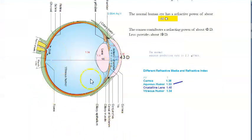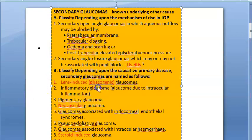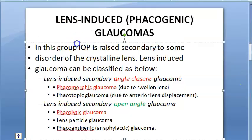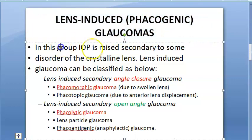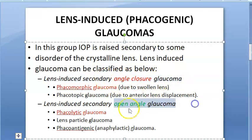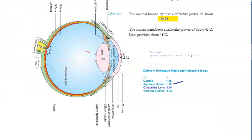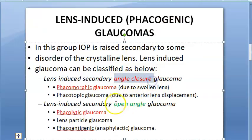Lens-induced glaucomas are also called phacogenic glaucomas — phacogenic meaning because of the lens. Under lens-induced or phacogenic glaucomas, we have two types: lens-induced secondary angle-closure glaucoma and open-angle glaucoma. So you have only two types: open angle and angle closure.